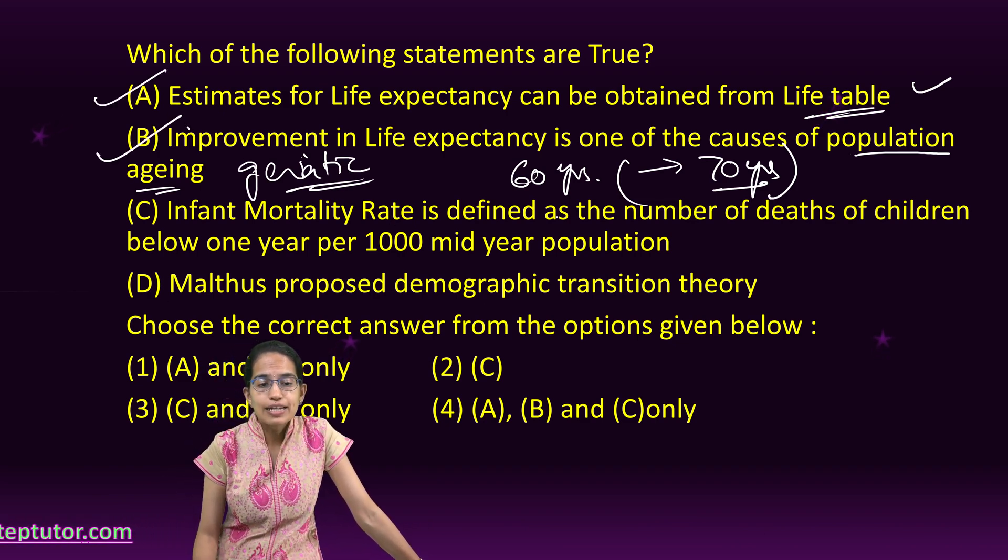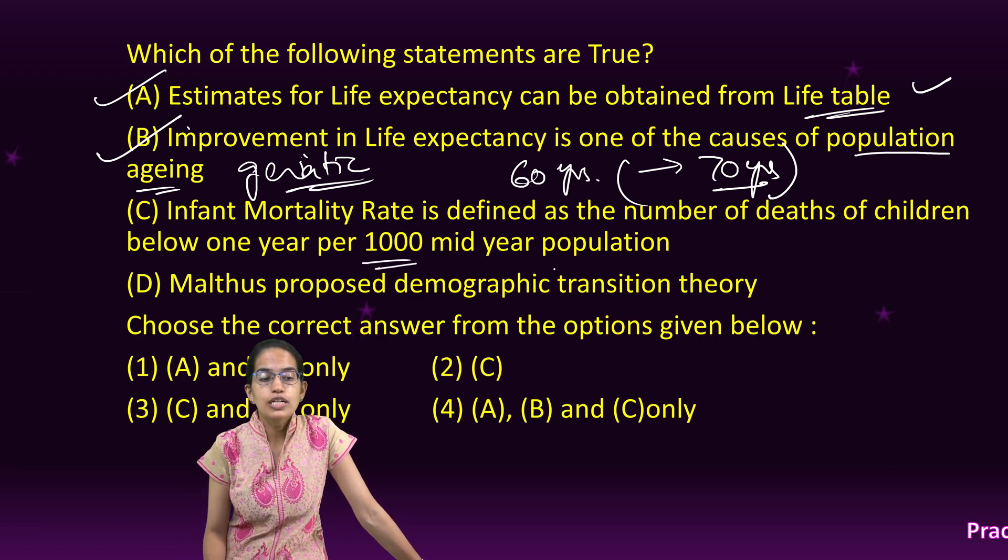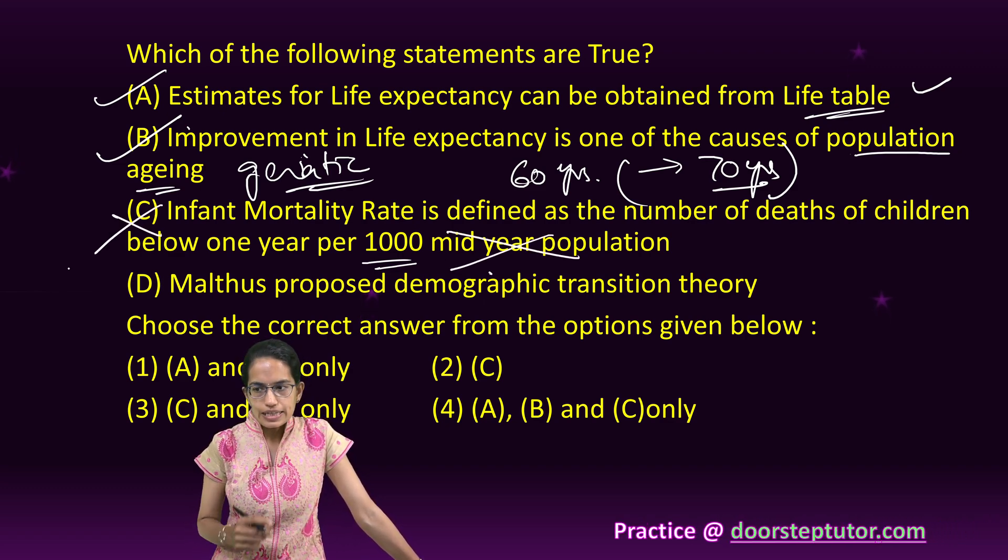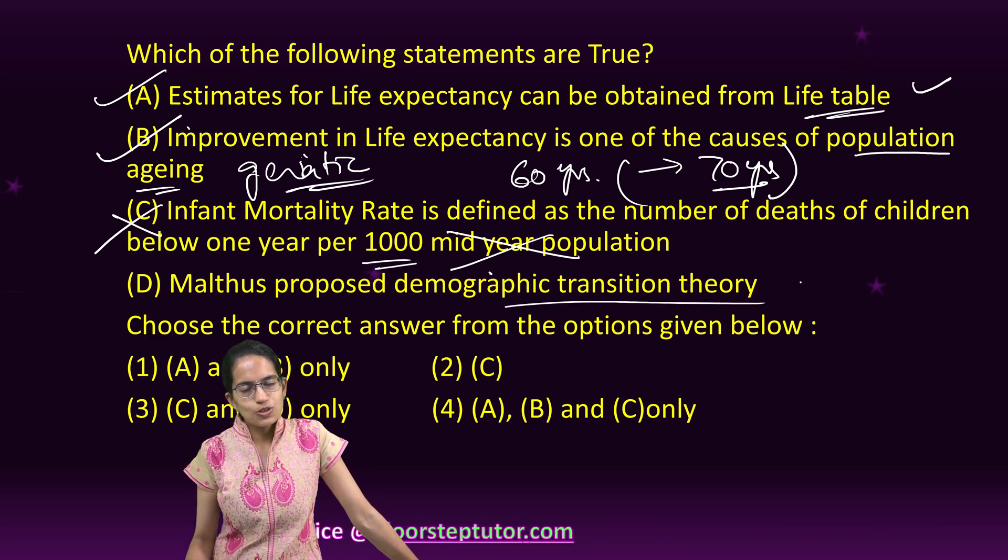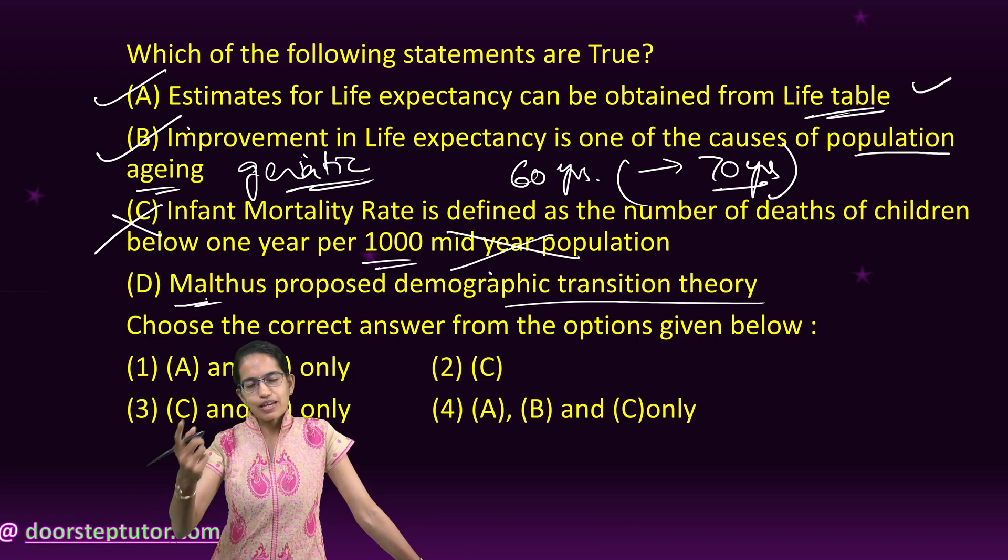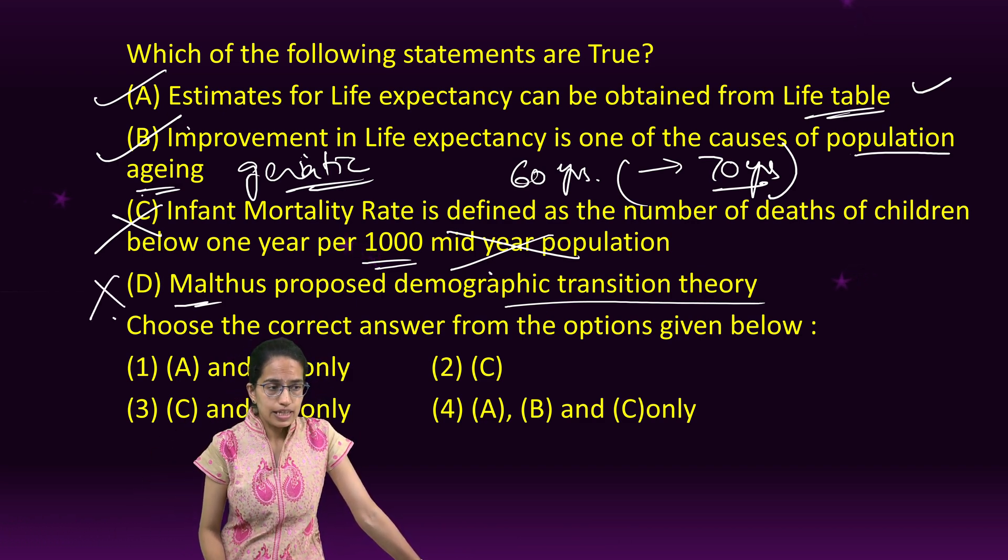Infant mortality rate is defined as number of children dying below the age of one year per thousand live births. So C is incorrect here. Who proposed the demographic transition theory? It was proposed by Notestein. Malthus gave the Malthus theory of population. So again, A and B becomes the correct option. This was related to demography and population geography.